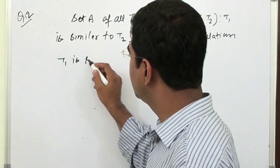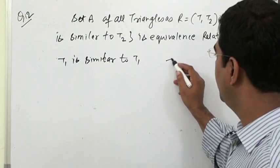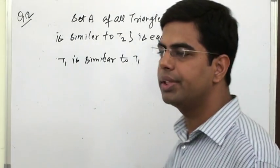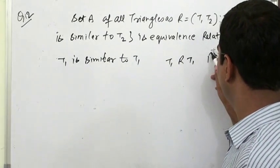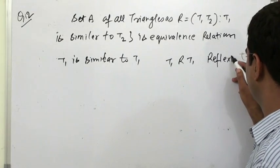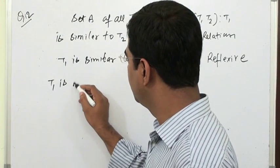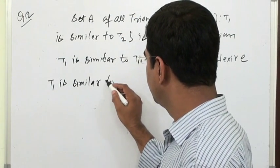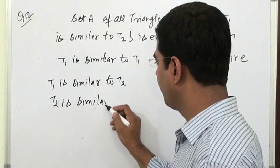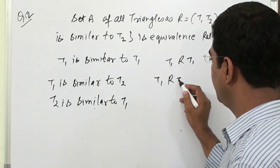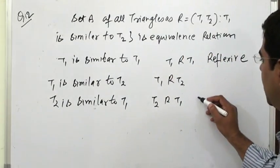First, Reflexive: T1 is similar to T1, so T1 is related to T1 — the relation is reflexive. Second, Symmetric: if T1 is similar to T2, then T2 is similar to T1, so T1 related to T2 implies T2 related to T1 — this relation is symmetric.